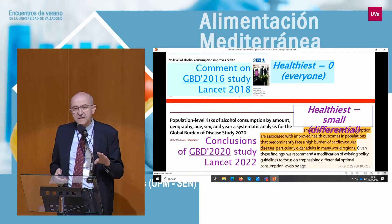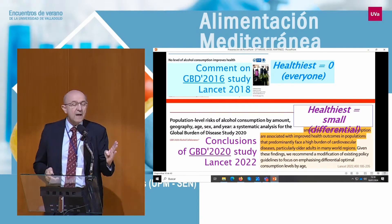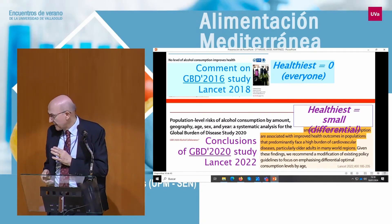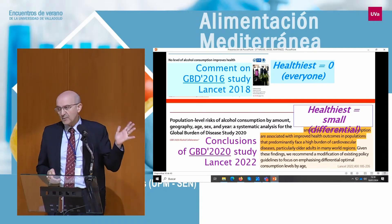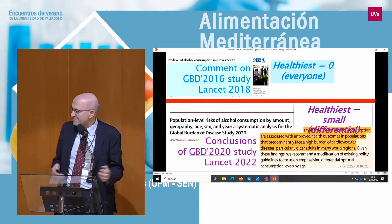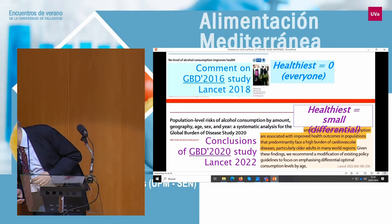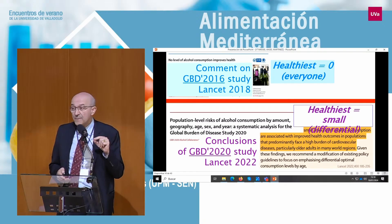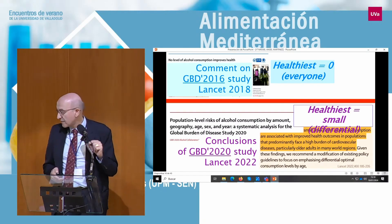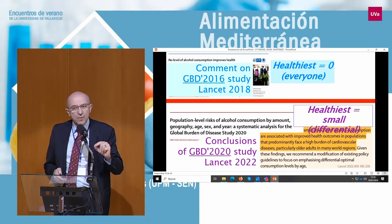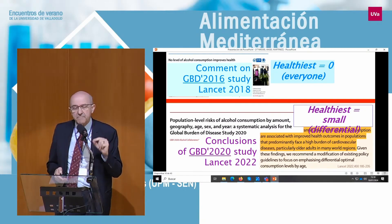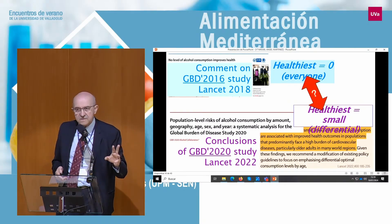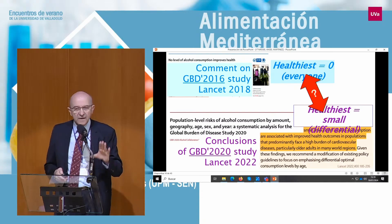Four years later, the same group published another paper with updated global burden of disease data. They said that small amounts of alcohol consumption are associated with improved health outcomes in populations that predominantly face a high burden of cardiovascular disease. So some small amounts of alcohol may do some benefit — the same group saying different things, four years apart. So we have a strong controversy here.